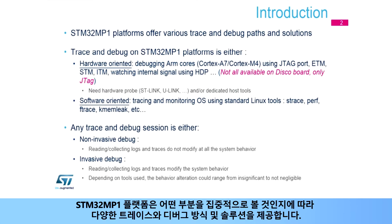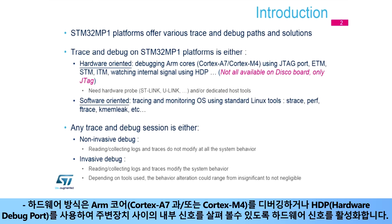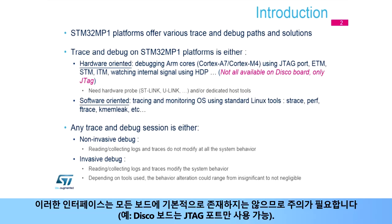The STM32MP1 platform offers various trace and debug paths and solutions, depending on the part to focus on. Both hardware and software interfaces are proposed on STM32MP1 platforms. The hardware path enables hardware signals for debugging ARM cores, Cortex-A7 and/or Cortex-M4, or for watching internal signals between peripherals by using the hardware debug port. Be careful: these interfaces are not present by default on all boards.